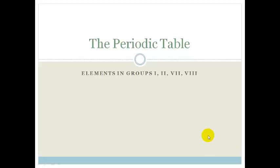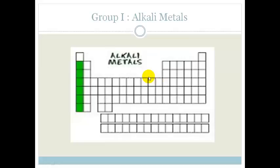G'day Great Tens. In today's lesson we're going to carry on learning about our trends in the periodic table and we're going to learn about our elements in groups 1, 2, 7 and 8.